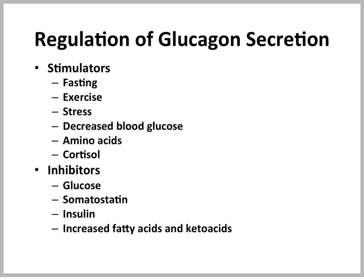Other inhibitors of glucagon secretion are, of course, glucose. When glucose is high, we do not need additional glucose in a healthy animal. Somatostatin inhibits glucagon secretion, not only glucagon secretion, but also insulin secretion. And insulin itself will inhibit glucagon secretion.